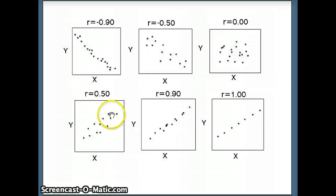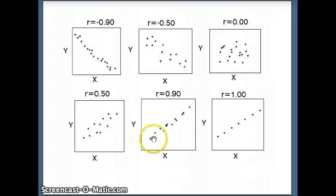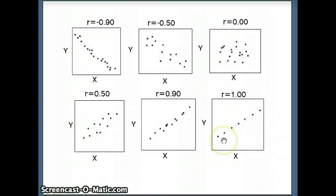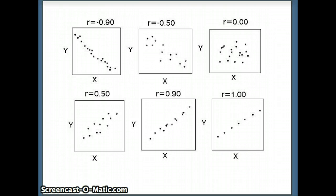Here we have another linear relationship: the points almost all lie on a straight line and the correlation is about 0.5. Here the points lie in a straight line more tightly bunched and the correlation is 0.9 — positive slope, positive correlation. And here is a perfect positive correlation of one: you could exactly predict the y value by looking at the x value and plugging it into the equation of that line.